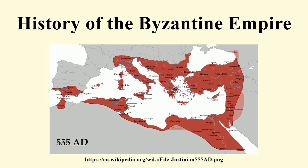Several events from the 4th to 6th centuries marked the transitional period during which the Roman Empire's east and west divided. In 285, Emperor Diocletian partitioned the Roman Empire's administration into eastern and western halves. Between 324 and 330, Constantine I transferred the main capital from Rome to Byzantium, later known as Constantinople and Nova Roma.